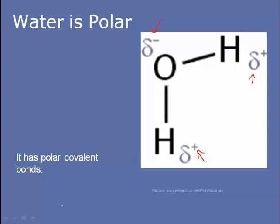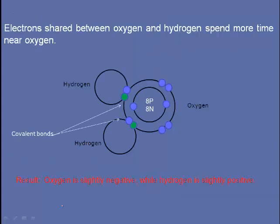You can see that there are eight protons in the nucleus of an oxygen atom and eight neutrons, whereas a hydrogen atom only has one proton and maybe one, two, or three neutrons. So they don't have as much of a pulling power to keep their own electrons close to them.